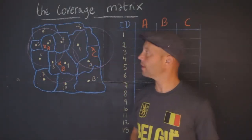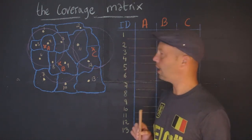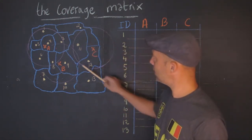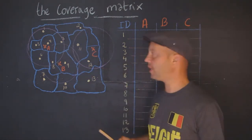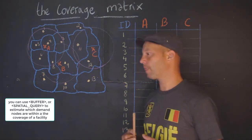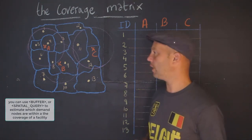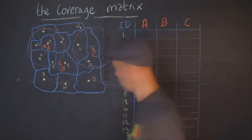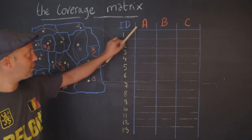One thing I would like to point out before we move on to filling in this coverage matrix: those radiuses that I was talking about, in a geographic information system or GIS, can easily be created using this function called buffer, or this query by location. Those are spatial queries, pretty straightforward. I'm going to move here to what I would call this coverage matrix.